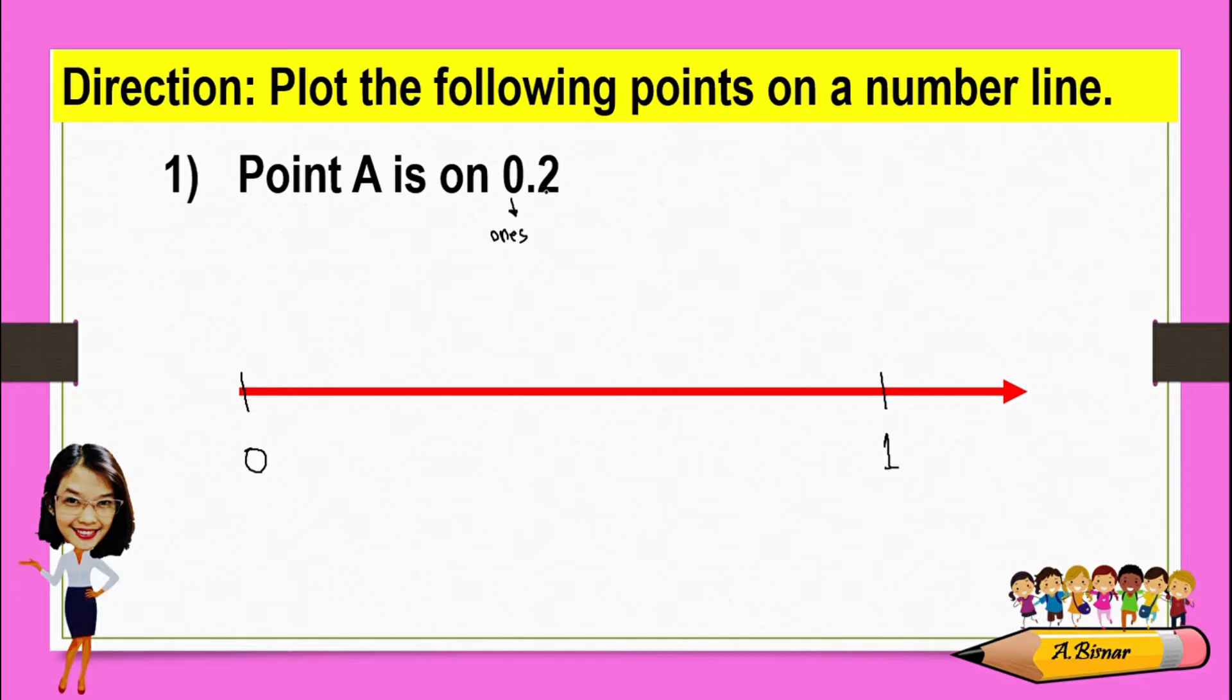As you observe, this 0.2 is properly read as two tenths, which means 2 out of 10. From here, we can divide 0 to 1 into 10 equal parts.